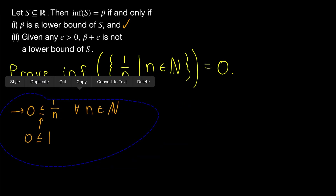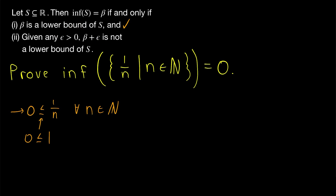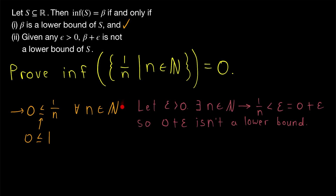So we've proven the first condition: zero is a lower bound of our set. We do that by starting with the fact that zero is less than or equal to one, and then dividing both sides of the inequality by an arbitrary natural number n. To finish things off, we just need to prove that if we add any positive real number to zero, we do not get a lower bound of our set.